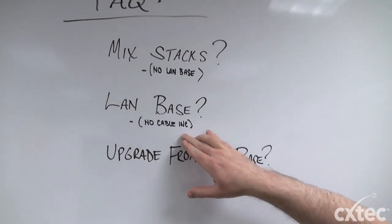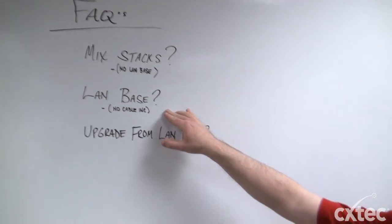There is no cable included with a LAN base model 3750X. That's just because originally, when they were first released, stacking was not an option. They later amended that through software. So now you can do it, but you do need to make sure that you include that stacking cable when you place your orders.